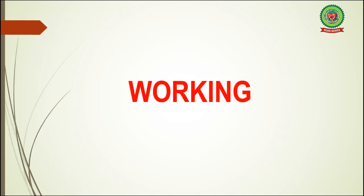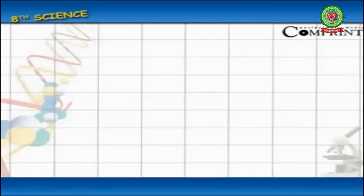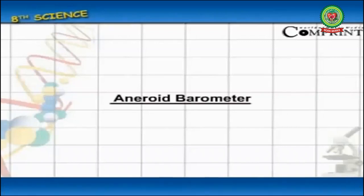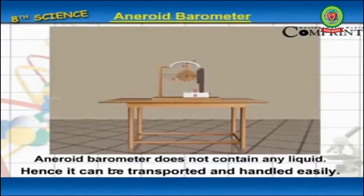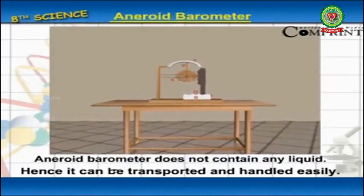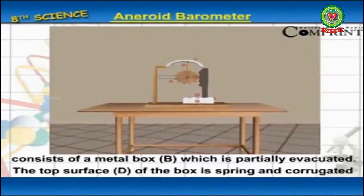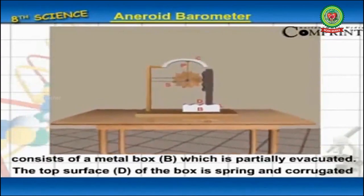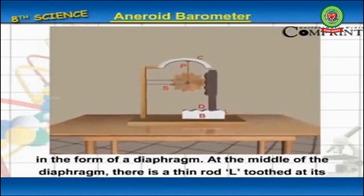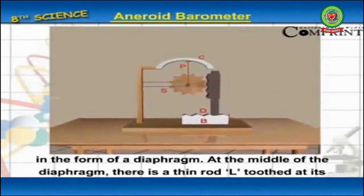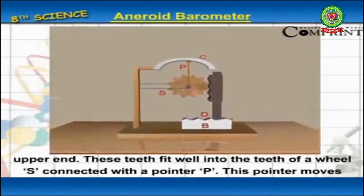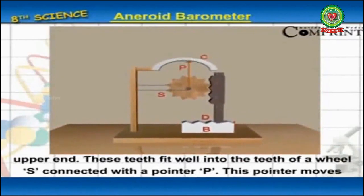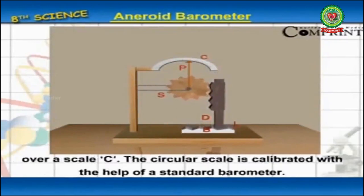Now let's see the working of the aneroid barometer through a module. The aneroid barometer does not contain any liquid, hence it can be transported and handled easily. It consists of a metal box B which is partially evacuated. The top surface D of the box is springy and corrugated in the form of a diaphragm. At the middle of the diaphragm there is a thin rod L toothed at its upper end. These teeth fit well into the teeth of the wheel S connected with the pointer P, which moves over a scale C. The circular scale is calibrated with the help of a standard barometer.